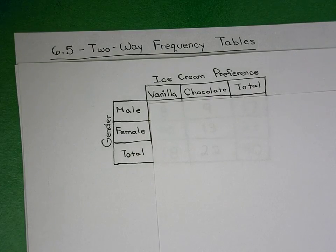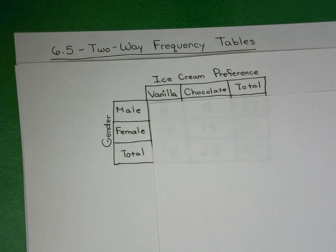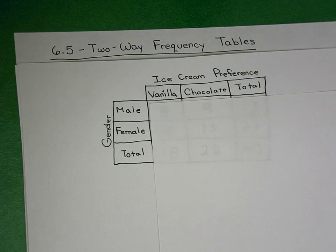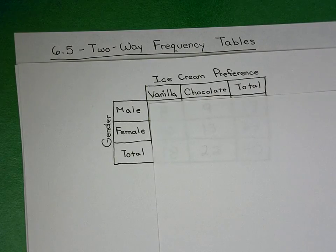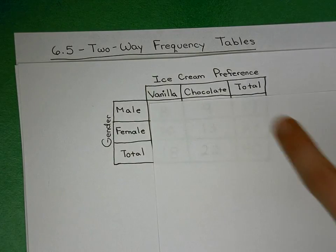I have an example here. We have ice cream preference versus gender, which are our two variables in this particular case. For ice cream preference, they could choose between vanilla and chocolate. And for gender, it's male or female. You took your survey and interviewed 40 people.